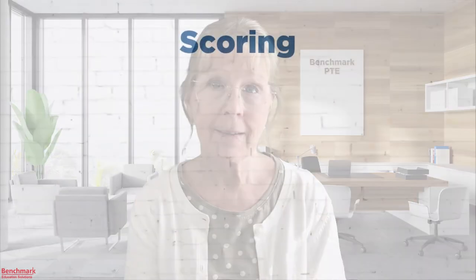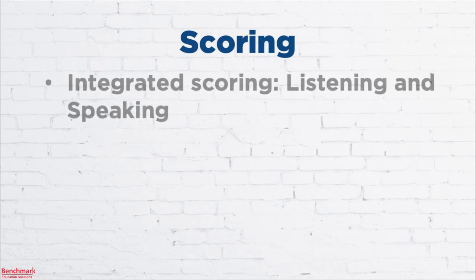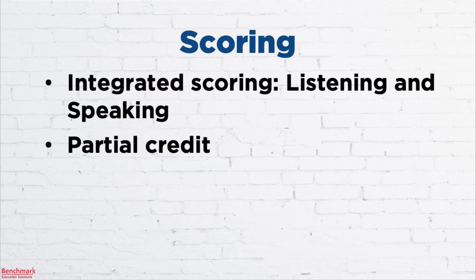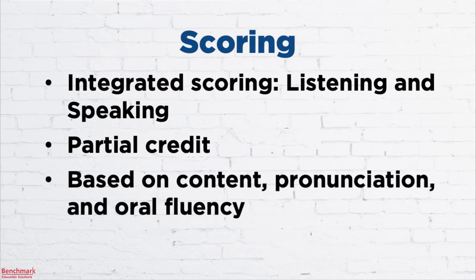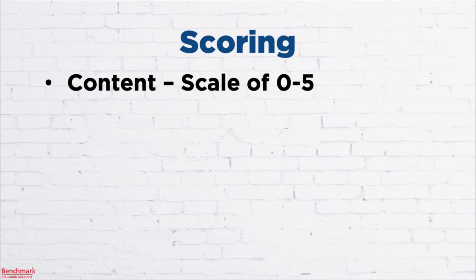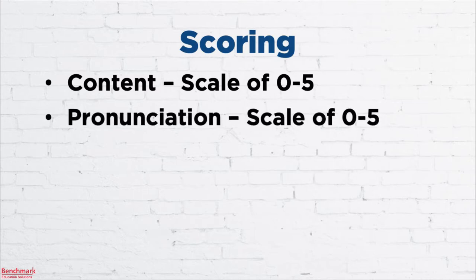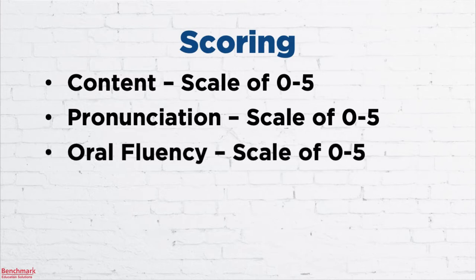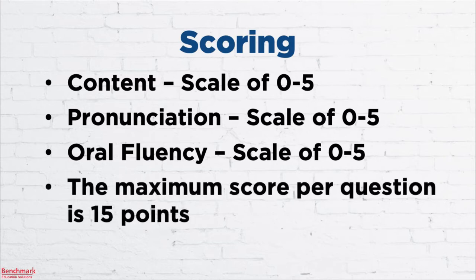Now let's take a look at how this question is scored. This question features integrated scoring because it tests both your listening and your speaking skills. You'll receive partial credit depending on how you answer. The scoring is based on content, pronunciation, and oral fluency. Your content score ranges from 0 to 5, your pronunciation score also ranges from 0 to 5, and your oral fluency score is also based on a scale from 0 to 5. So you can see that there are 15 possible points to earn from each question, and you could have 3 or 4 of these questions on test day.